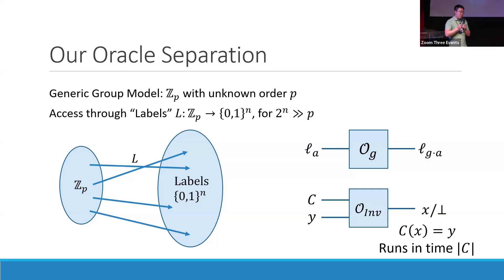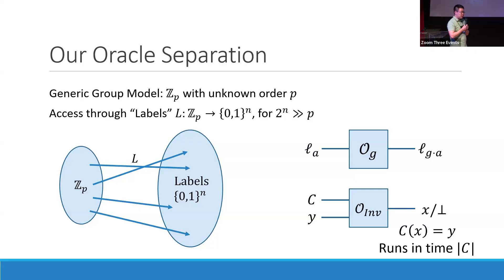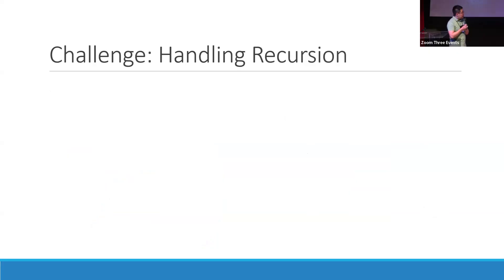The inversion oracle outputs either X, meaning C of X equals Y, or bot if no such X exists. This runs in time proportional to the size of the circuit C. One specific challenge is that we want this inversion circuit to be powerful enough to ensure there are no one-way functions. But think about the circuit: if you take a multiplication gate and feed it into an inversion circuit, and you want this to be not one-way, then you must be able to invert this circuit itself.